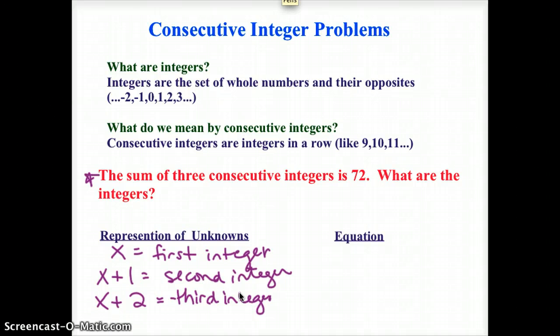If I try to write an equation for this problem, I'm going to set it up by saying, well the sum of these, so sum in math, remember that means you're adding the answer to an addition problem. So I'm going to add, a good equation might be saying x plus x plus 1 plus x plus 2. That's going to equal my sum of 72.